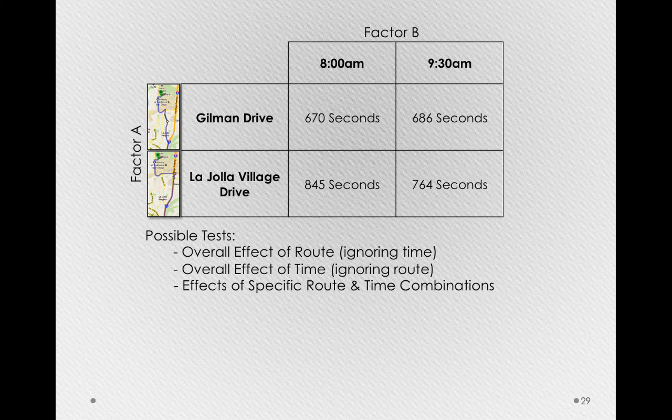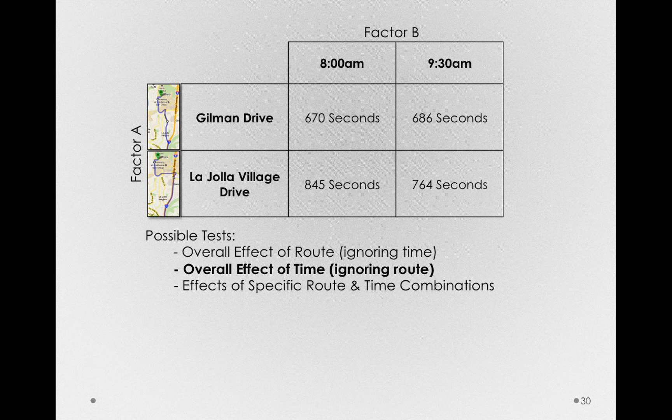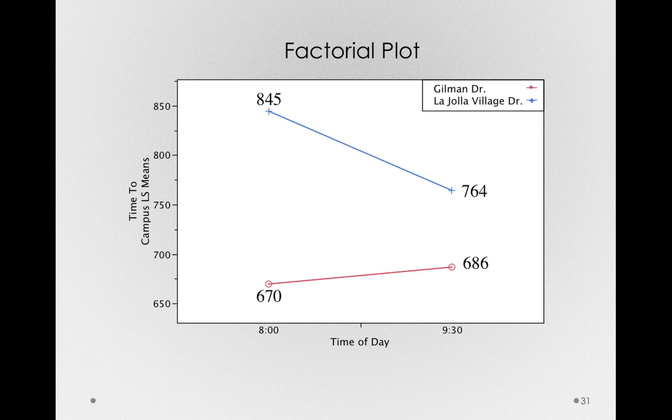Okay, we've done the first test. Let's look at the overall effect of time ignoring route. So using our factorial plot again, let's see what it would look like to ignore route.